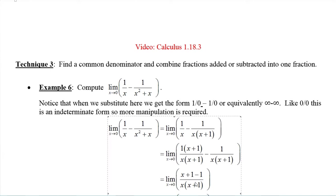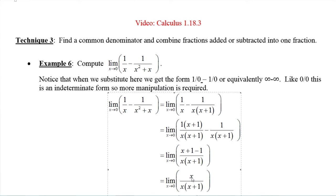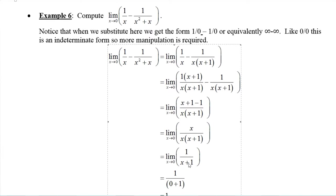Now the denominators are the same, so we keep the denominators and add the numerators. One times x plus one is x plus one, so the numerator becomes x plus one minus one over x times x plus one. That simplifies: one minus one is zero, leaving x. We can cancel these x's since x is not zero — it's only approaching zero. So this is equivalent to one over x plus one for x not equal to zero.